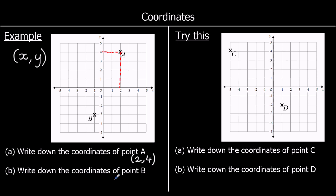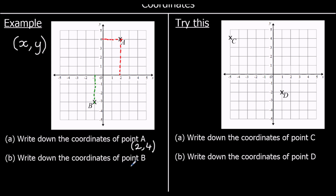Write down the coordinates of point B. Again, the first one is going to be the x-coordinate. We can see that point B has an x-coordinate of negative 1. So it's going to be negative 1, then a comma — always x first — and then y. Its y-coordinate is negative 3. So the coordinates are (negative 1, negative 3).